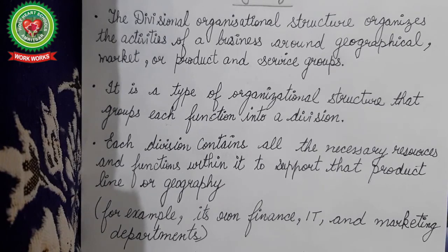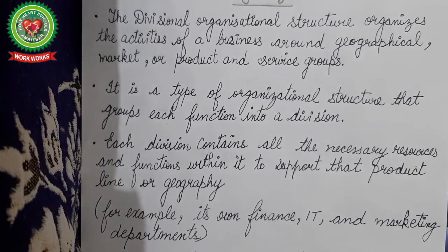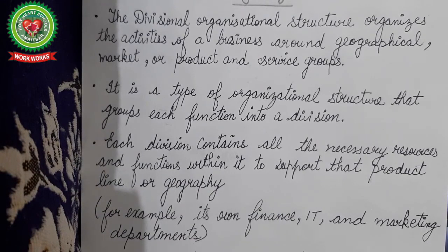We can say that divisional organization structure organizes the activities of a business around geographical markets, or product or service groups. It is a type of organizational structure that groups each function into a division, where every division contains all the necessary resources and functions within it to support that product line or geography. Having a divisional structure gives a large business enterprise the ability to segregate large sections of company business into segments.